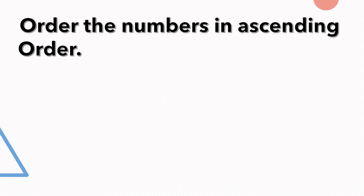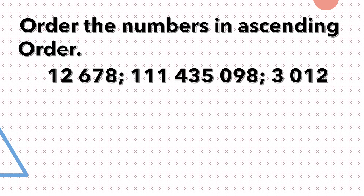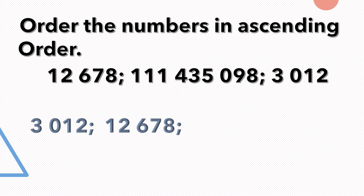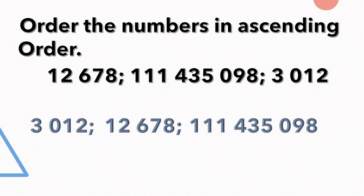Order the numbers in ascending order: 12,678; 111,435,098; 3,012. Remember, when ordering in ascending order you arrange numbers from small to large. The smallest number is 3,012, the second smallest is 12,678, and the largest number is 111,435,098. Remember to arrange from small to large.